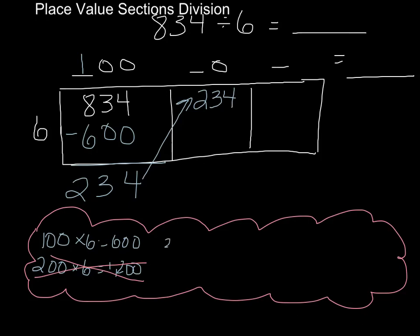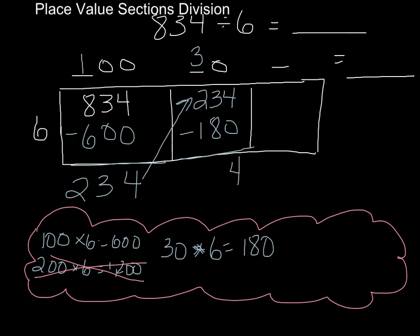So in my head I'm thinking: what was 30 groups of six? That was 180. I definitely can't do 40 because that goes above my number. So I can get 30 more groups of six out of what I have left, and I'm going to need to remove those. That leaves me with 54 left.